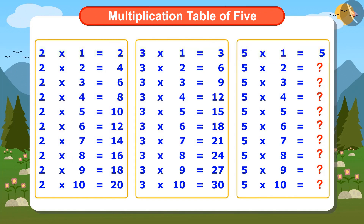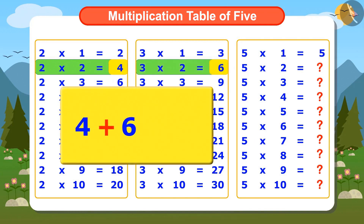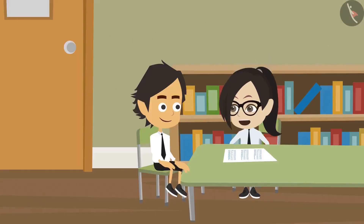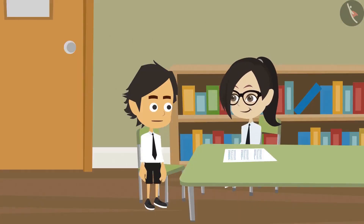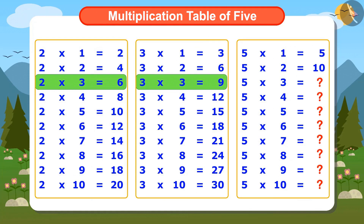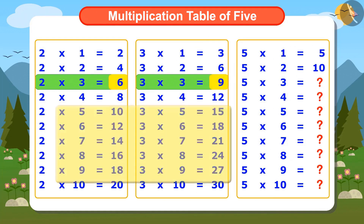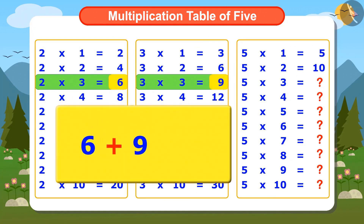I don't think we can find the next number similarly. We can find it exactly like this. Look, 2 multiplied by 2 is 4 and 3 multiplied by 2 is 6. If 4 and 6 are added, the answer will be 10. This means that 5 multiplied by 2 will be 10. Then we can find the third number in the multiplication table of 5 by adding the third numbers, 6 and 9, in the multiplication tables of 2 and 3, which will be 15.